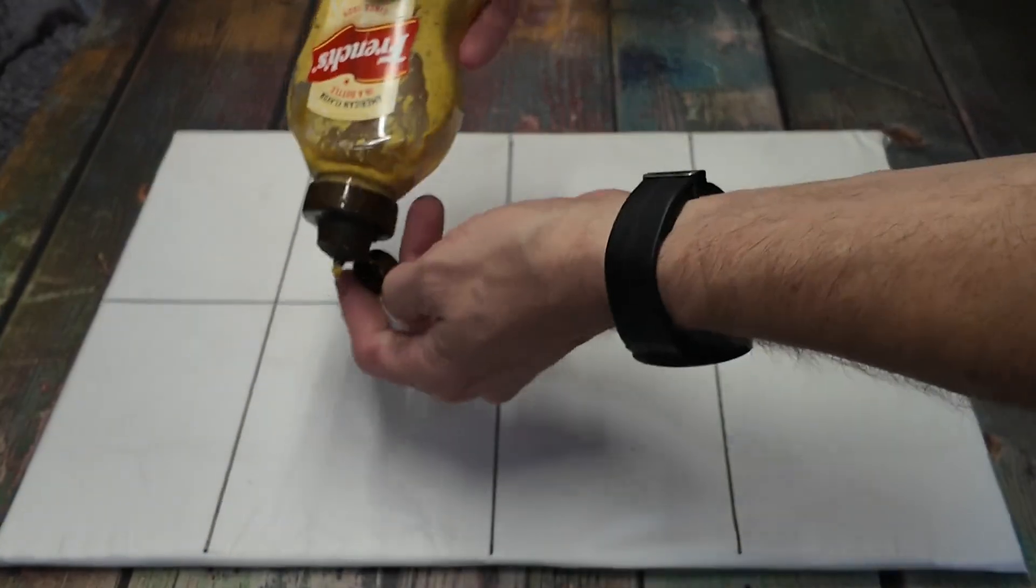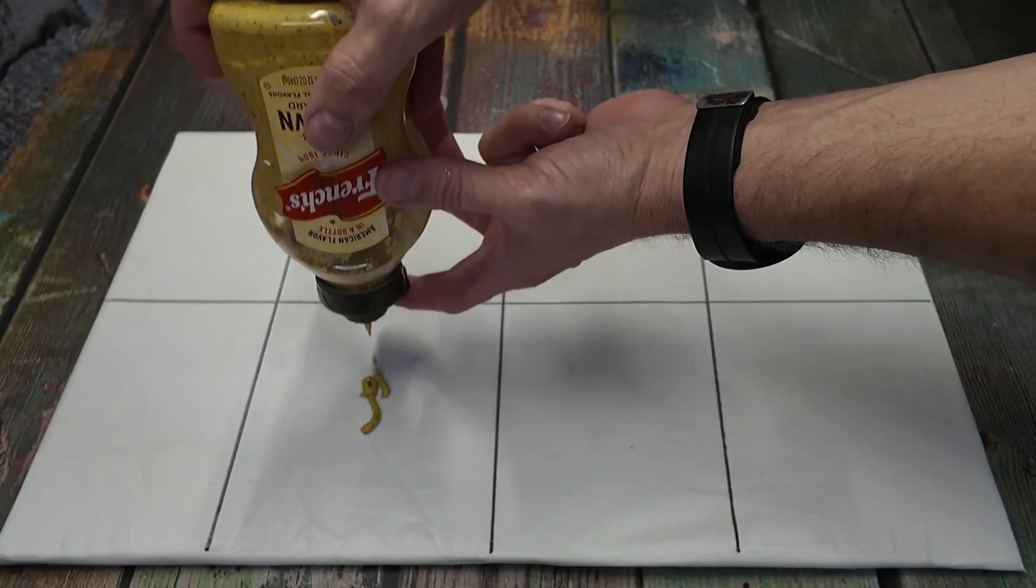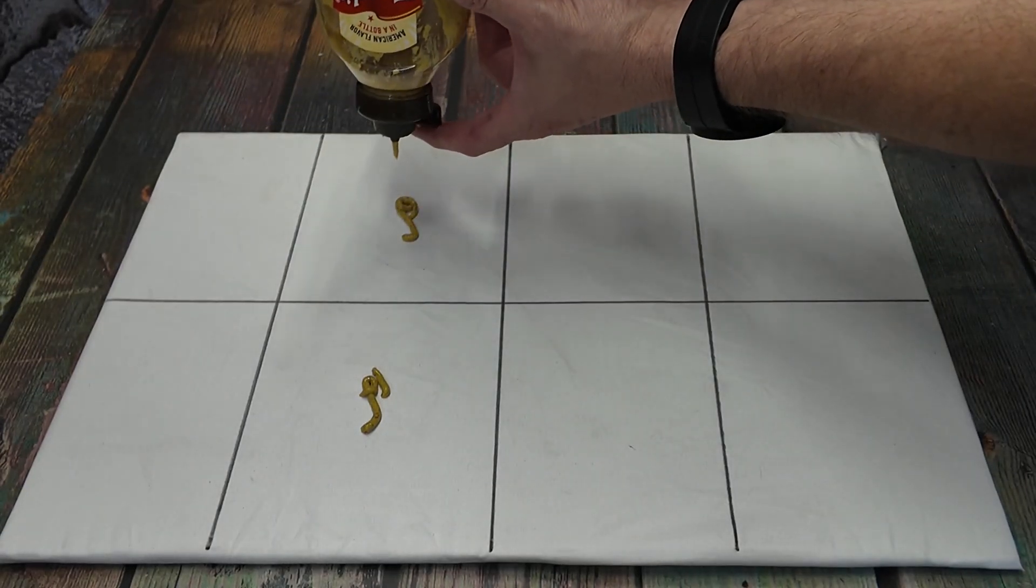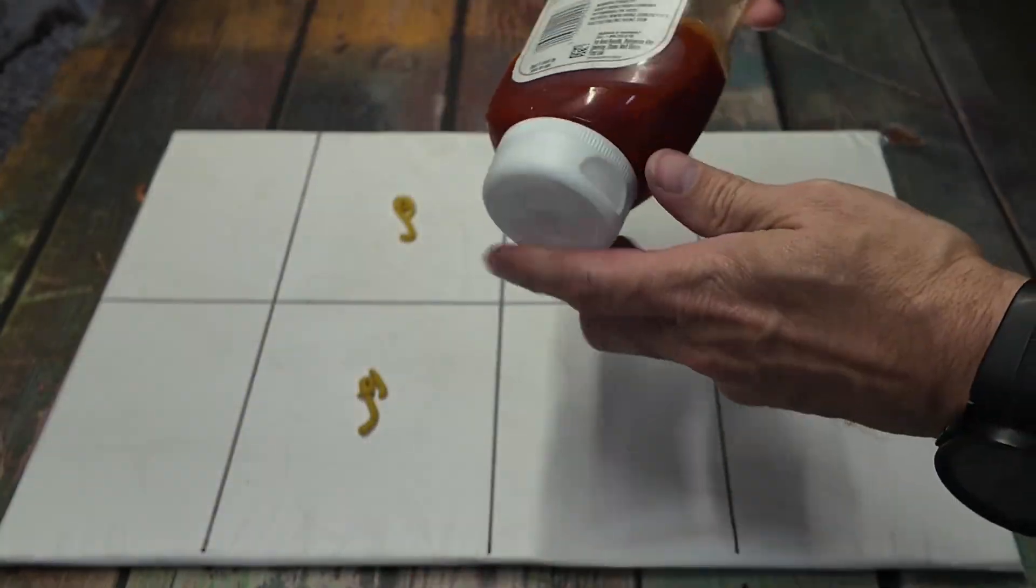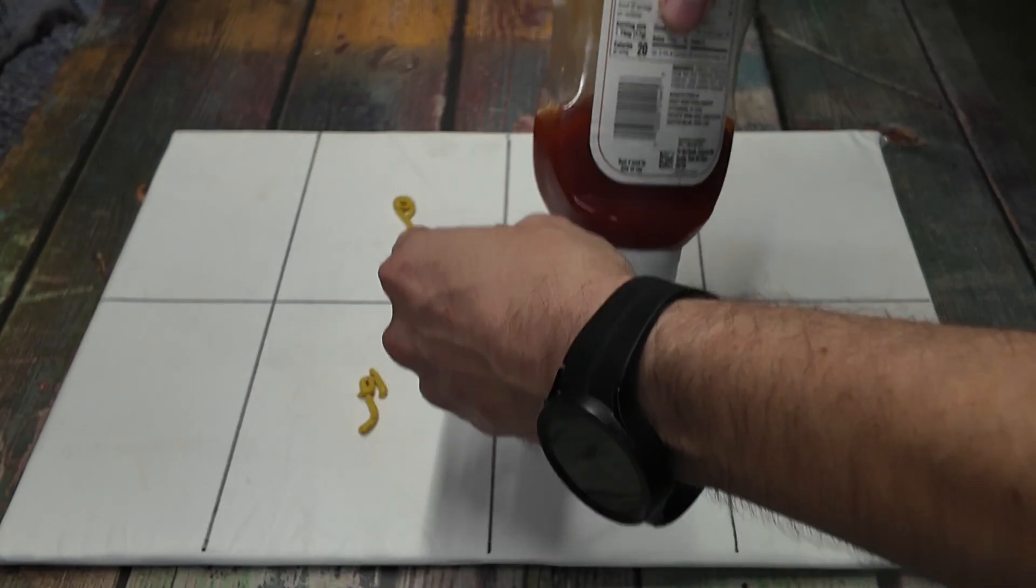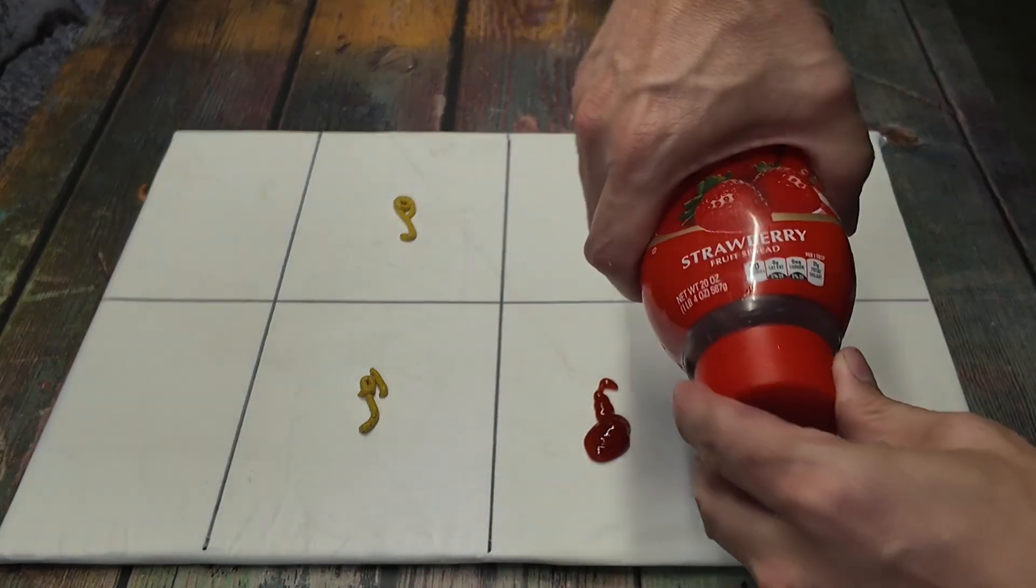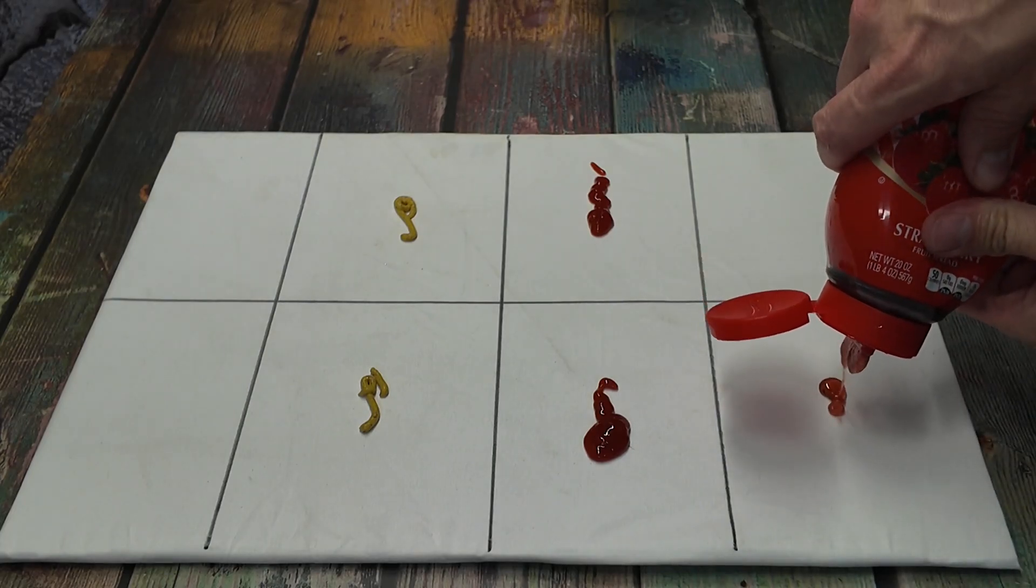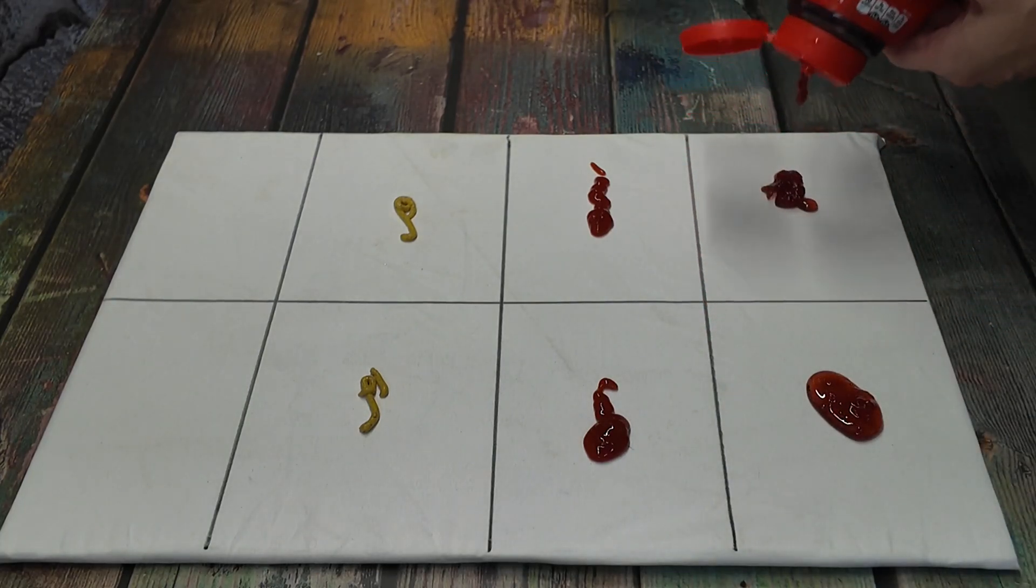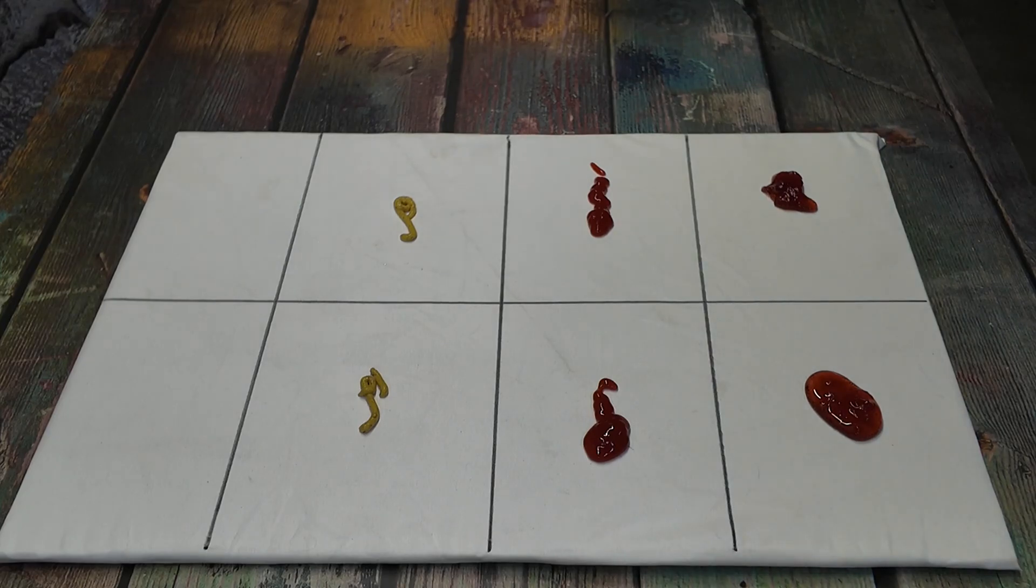Now for the real challenge: fabric. This is a cotton backing cloth. And honestly, this is what I designed this tool for. We've all been there, wearing your favorite t-shirt, enjoying some wings or a hot dog loaded with all the toppings, and you drop sauce right in the middle of your shirt.